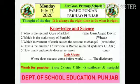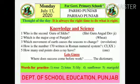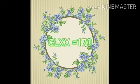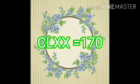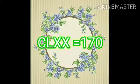The next question is: how is the number 170 written in the Roman numeral system? The answer is CLXX. CLXX means 170 in the Roman numeral system.